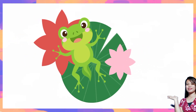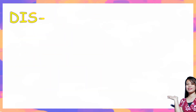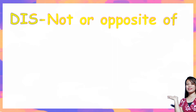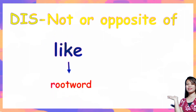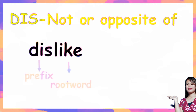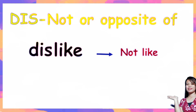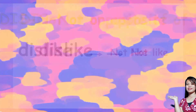Let us go to the next prefix: Dis. What do we mean by Dis? Dis means not or opposite of. We have the root word 'like.' When we add the prefix Dis, it forms the word 'dislike,' which means not like. For example, 'I dislike you' means 'I do not like you.'